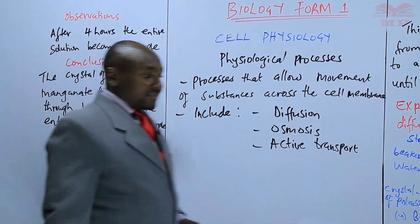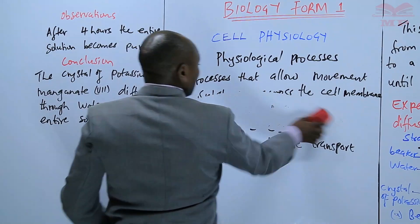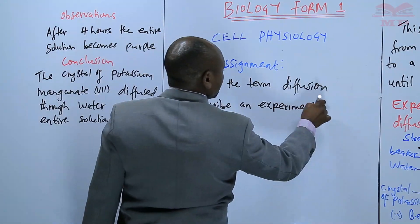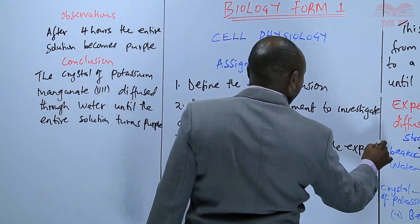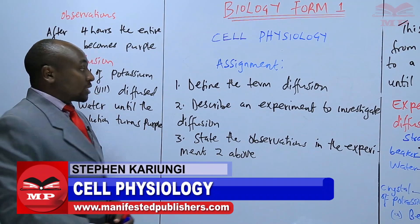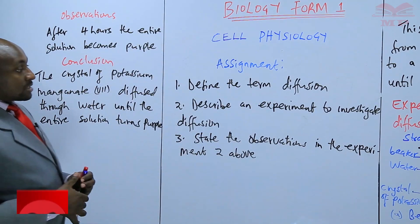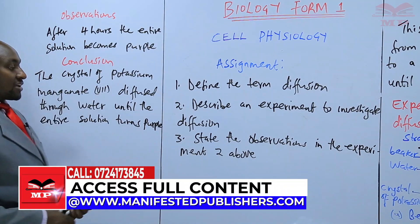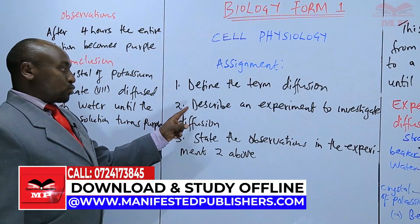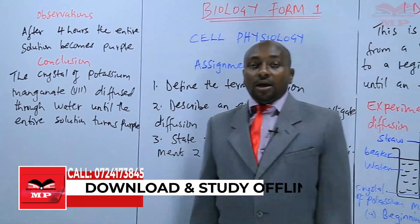We will stop there and have the assignment for the day. The assignment is as follows: Question one, define the term diffusion. Question two, describe an experiment to investigate diffusion. Question three, state the observations in experiment number two — what are the observations you will make in that particular experiment? We will stop there for today. Goodbye.